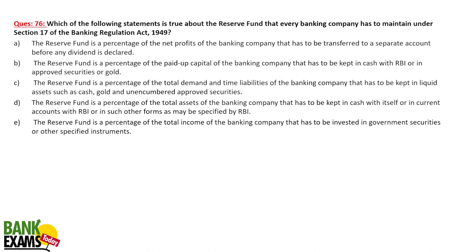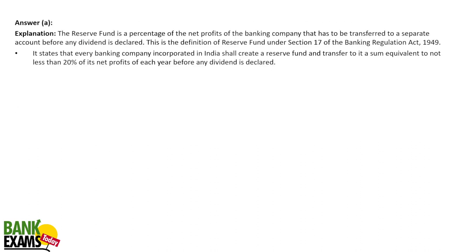Under Section 17 of the Banking Regulation Act, a banking company incorporated in India shall create a reserve fund and transfer to it a sum equivalent to not less than 20% of its net profit each year before any dividend is declared. The reserve fund is a percentage of net profit that must be transferred to a separate account before dividend declaration.